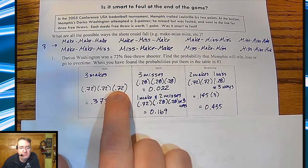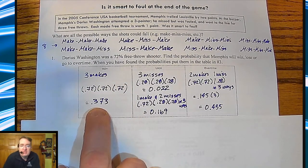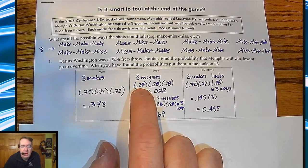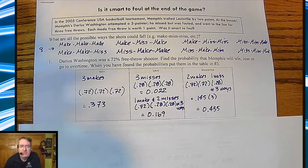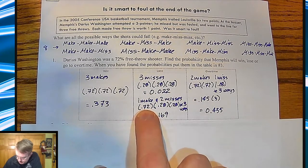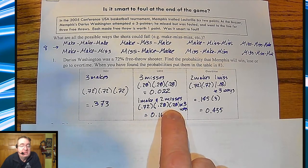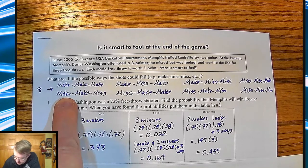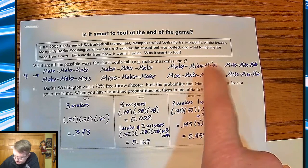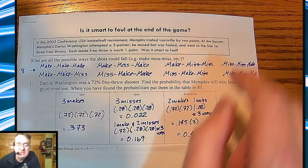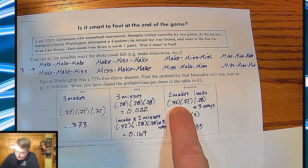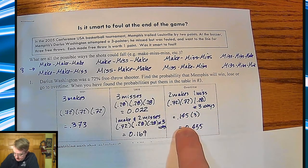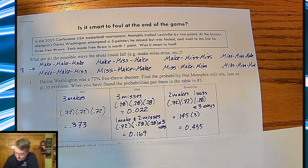That works out to a probability of 0.373, or just over 37%. For three misses: 28% times 28% times 28%, which is about 0.02%. For one make and two misses, it's 72% times 28% times 28%. Since multiplication is commutative, we multiply by three — that comes out to about 17%. And for overtime — two makes and a miss — that's about 14.5%, and we have three of those, so that goes up to 43.5%.